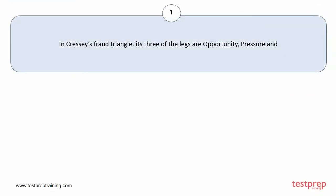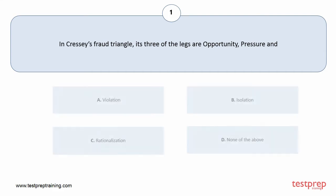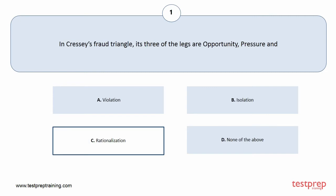Question number 1. In Cressey's Fraud Triangle, its 3 legs are Opportunity, Pressure, and [blank]. Your options are A. Violation, B. Isolation, C. Rationalization, D. None of the above. The correct answer is option C.